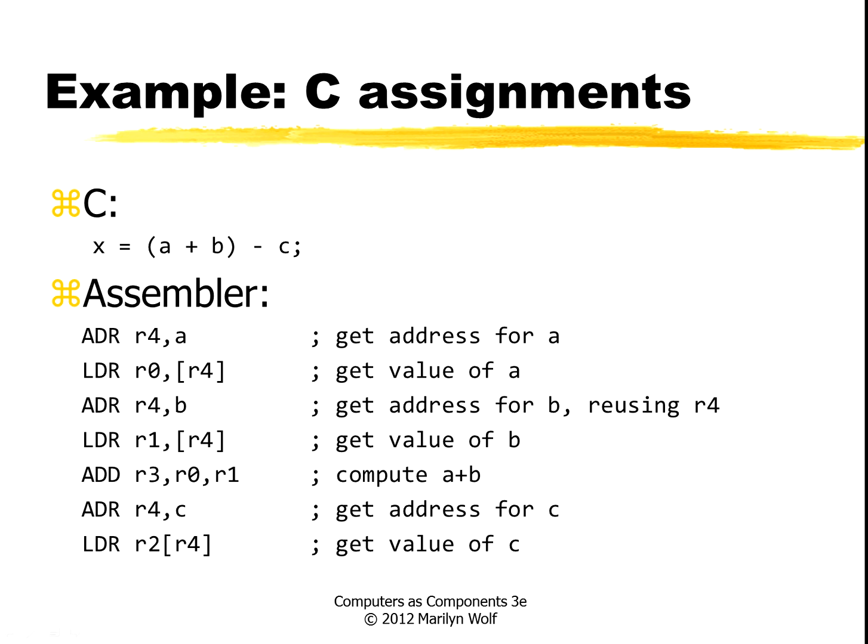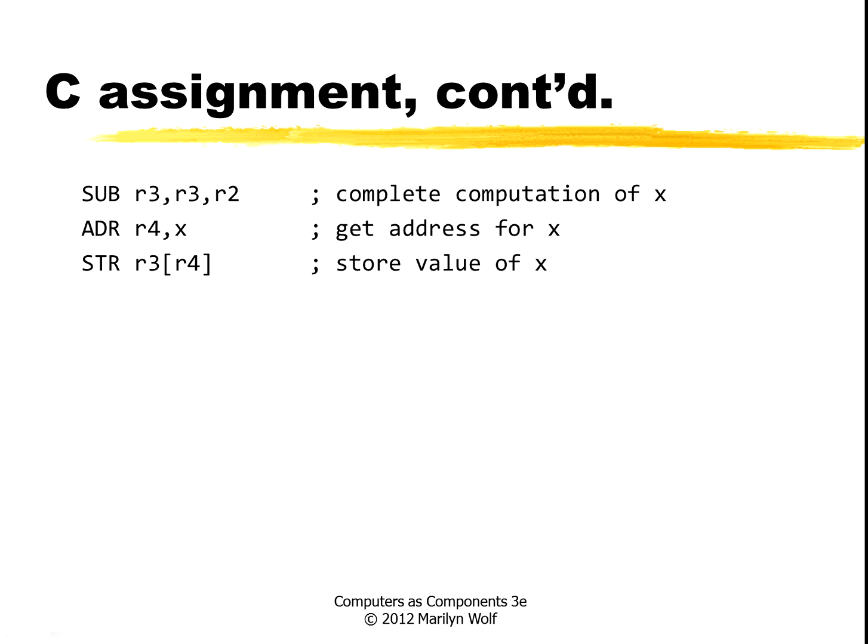Here's the first part of the assembler code where we first get the address for a, then load the value of a, get the address for b, load the value of b, compute a plus b, then do the same thing for c. Here's the subtraction, and now we get the address for x so that we can store its value.